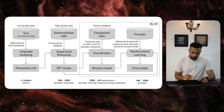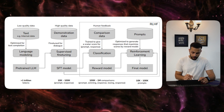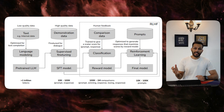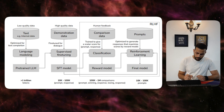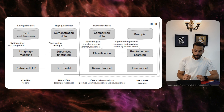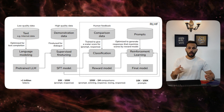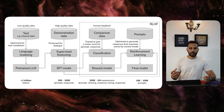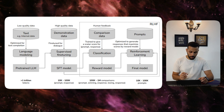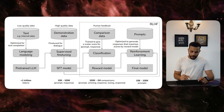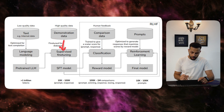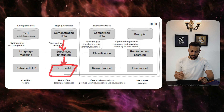As you can see in the diagram, to create the base model, we first use low-quality data but in large quantity — in trillions of tokens — such as internet data, which is used in the language modeling task to create a base model. This base model is then fine-tuned on high-quality data, which is used to fine-tune the model for dialogue in a supervised fine-tuning task to create an SFT model.